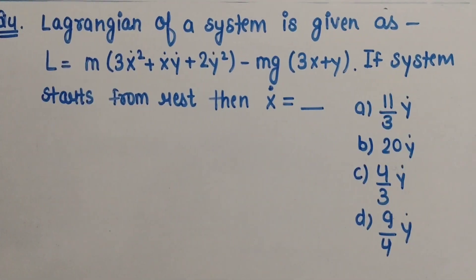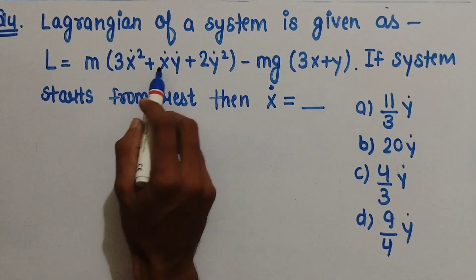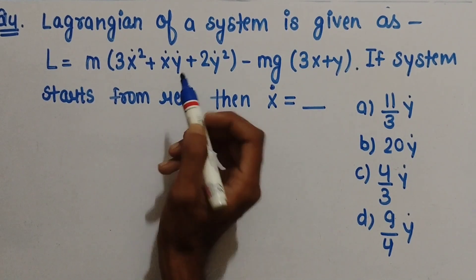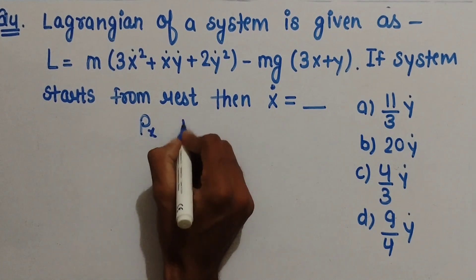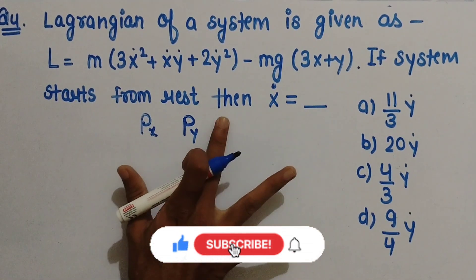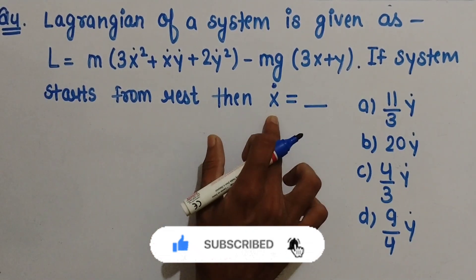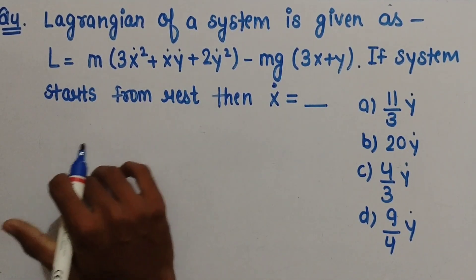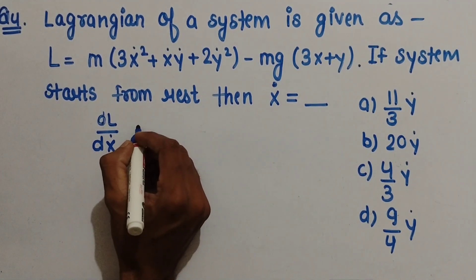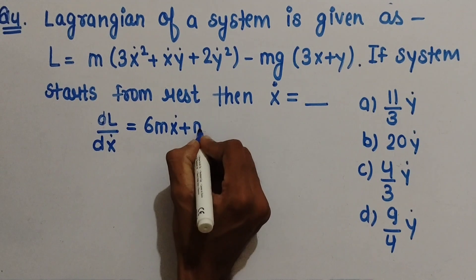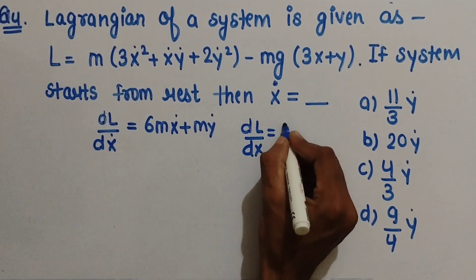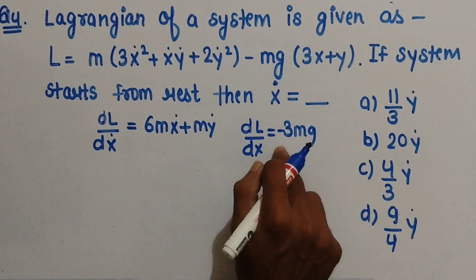This is our last question. The Lagrangian of the system is given as L equals m times (3 x-dot squared plus x-dot y-dot plus 2 y-dot) minus mgx. Here the Lagrangian is a function of both x-dot and y-dot. We can find px and py by differentiating with respect to x-dot and y-dot respectively. For the equation of motion we need del L upon del x-dot and del L upon del x. Differentiating with respect to x-dot gives 6m x-dot plus m y-dot.